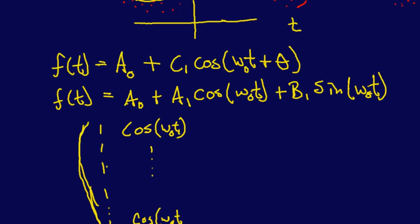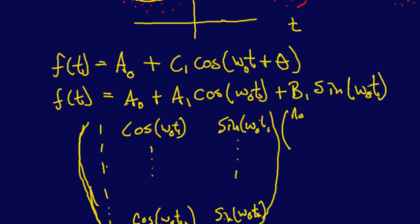So this would be t1 all the way to tn, depending on how many we have. And then this would just be sine omega naught t1 all the way to sine omega naught tn. And then our coefficients are going to be a naught, a1, and b1.